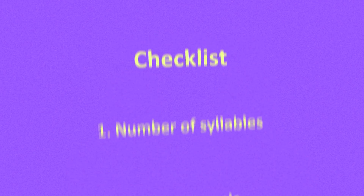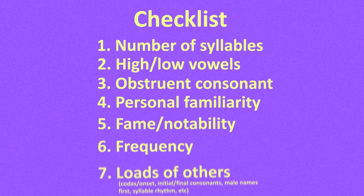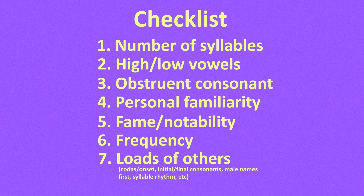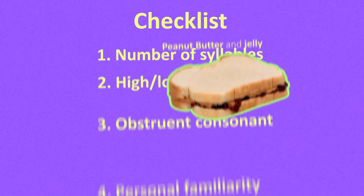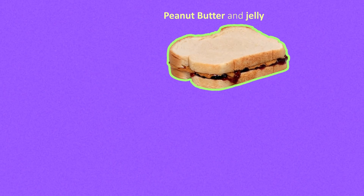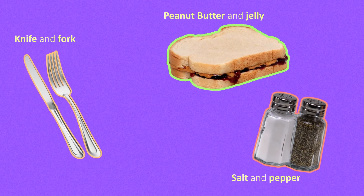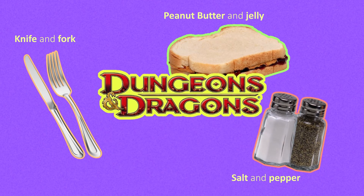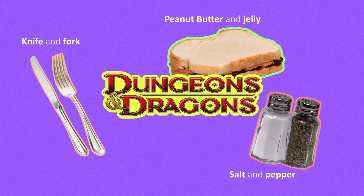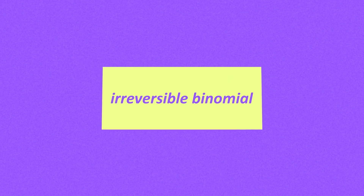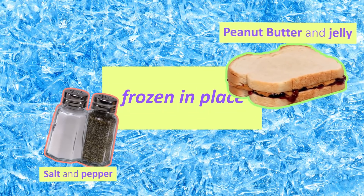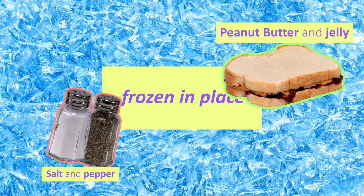This checklist of properties applies outside of names as well. How else do we decide the order of peanut butter and jelly, salt and pepper, knife and fork, dungeons and dragons? These word partnerships are known as irreversible binomials, or freezers, because the order is irreversibly frozen in place. Can you imagine the risk to society if you were to switch any of these words around?